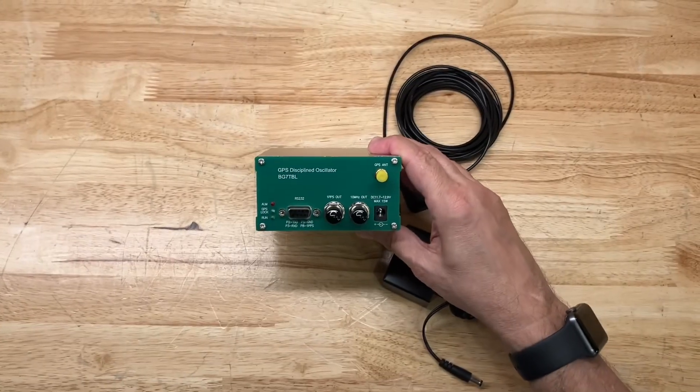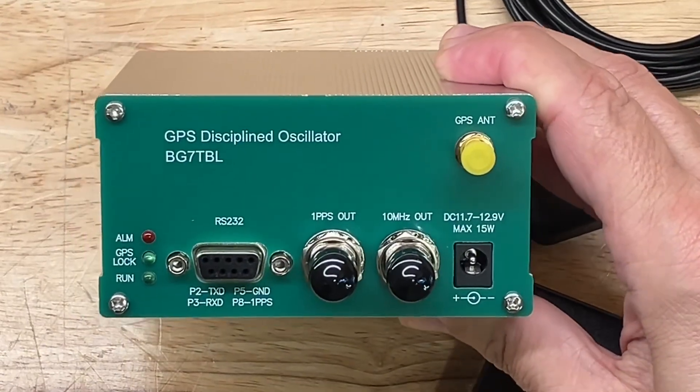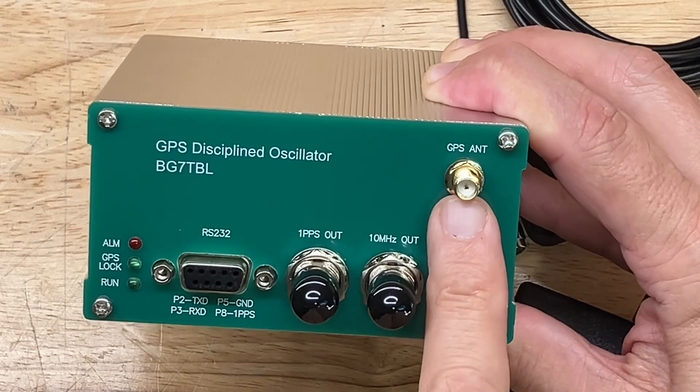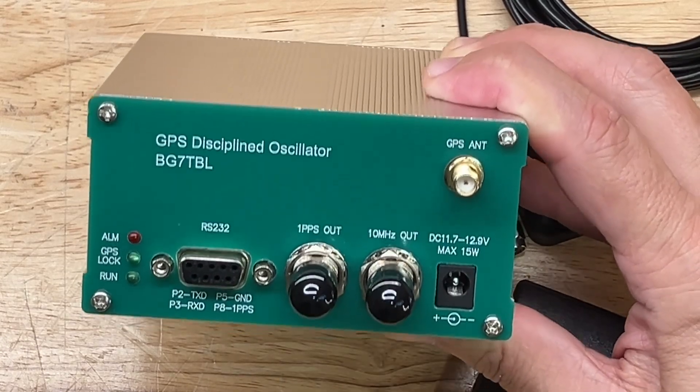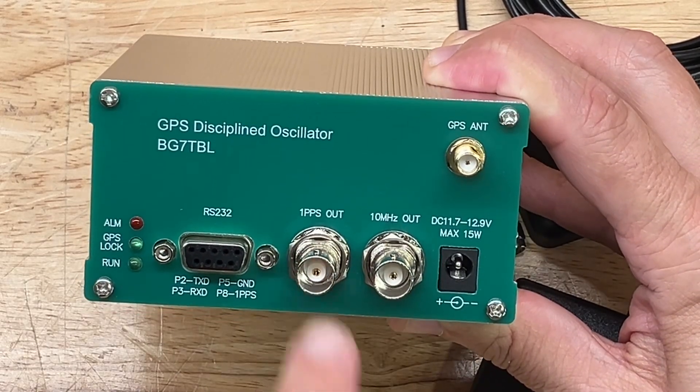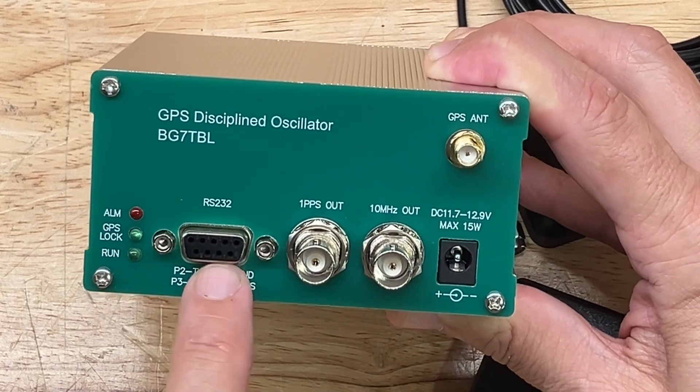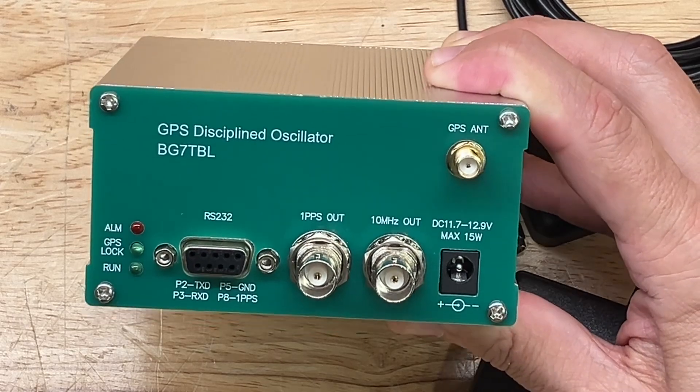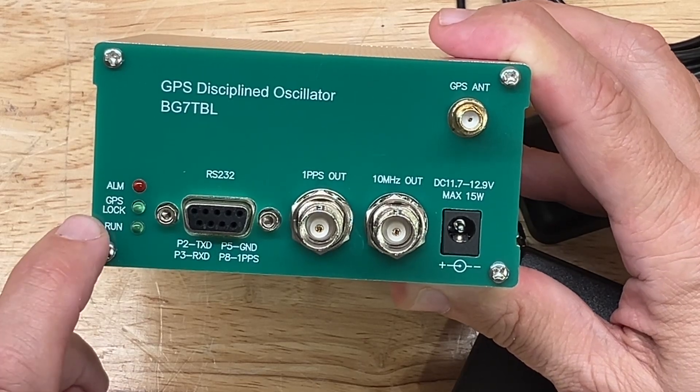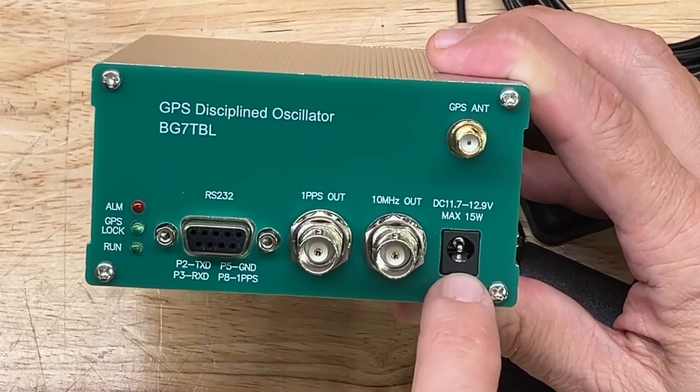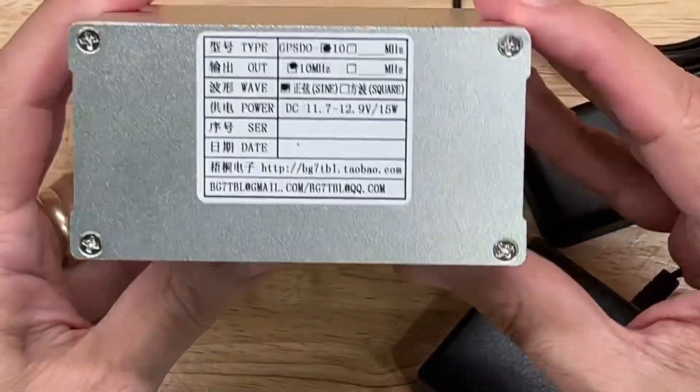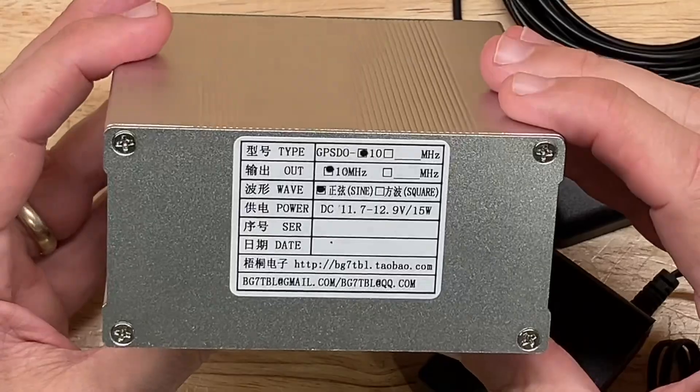Let's zoom in on the input on the front panel of this device and take a look at it. GPSDO. We have an SMA connector that connects to our GPS antenna. We have BNC connectors for 10 megahertz output and a one pulse per second output. There's a nine pin RS-232 connector that I'm not going to be using at all. And we have three LEDs, one for alarm, one for GPS lock, and one for run. It has a 12 volt DC input connector here, the power supplied externally. On the rear panel, we have some Chinese characters that I can't read and that's about it.